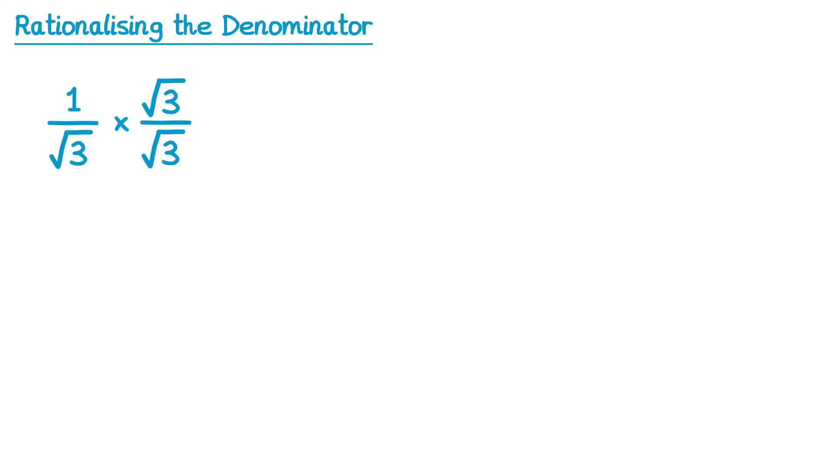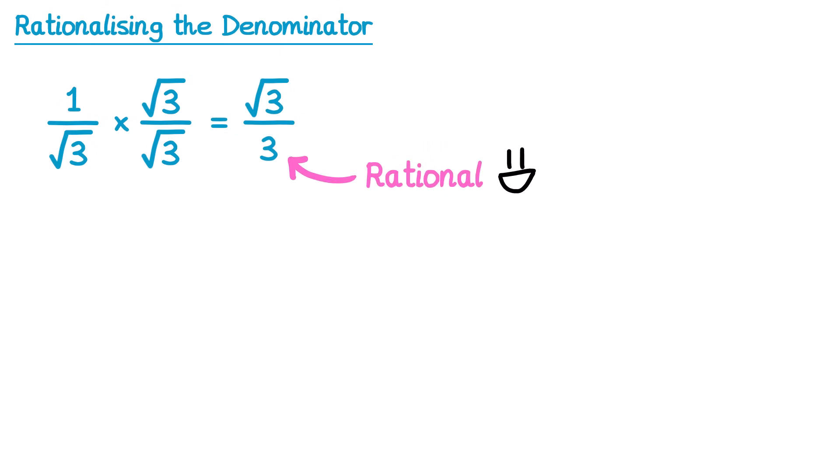So if we now multiply these fractions together, we do 1 times square root 3 on the top — that's square root 3 — and on the bottom, root 3 times root 3 is 3. Notice how the denominator is now a rational number. So we could say that 1 over square root 3 is the same as square root 3 over 3, and we have now rationalised the denominator.